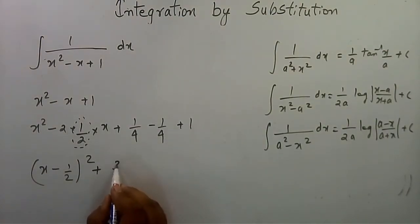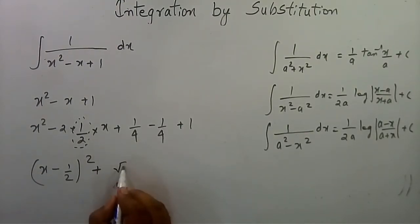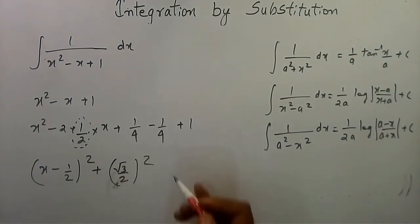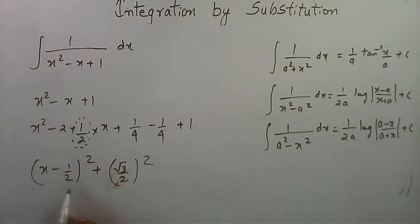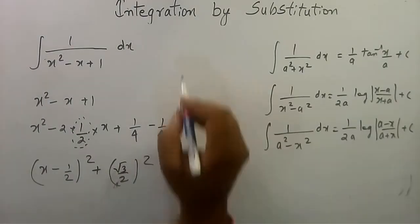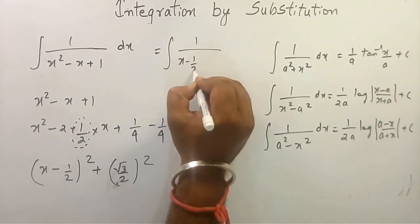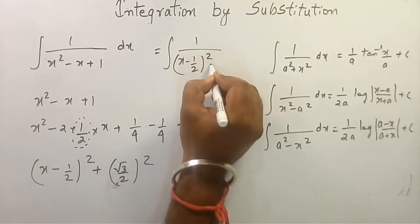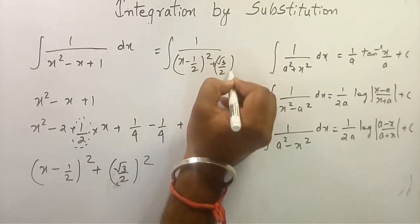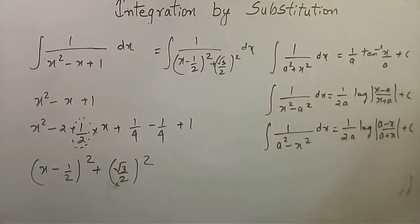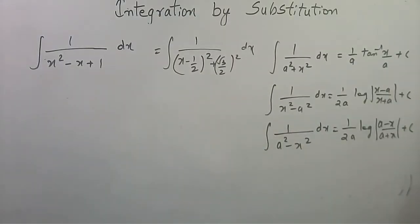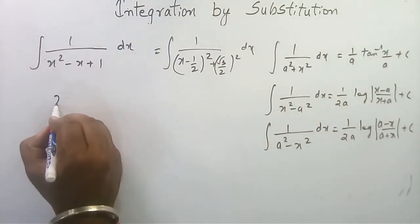This becomes (x - 1/2)² plus the remaining constant, which works out to 3/4. And 3/4 can be written as (√3/2)². So in place of x² - x + 1 we write (x - 1/2)² + (√3/2)². The integral then becomes ∫1/[(x - 1/2)² + (√3/2)²] dx.